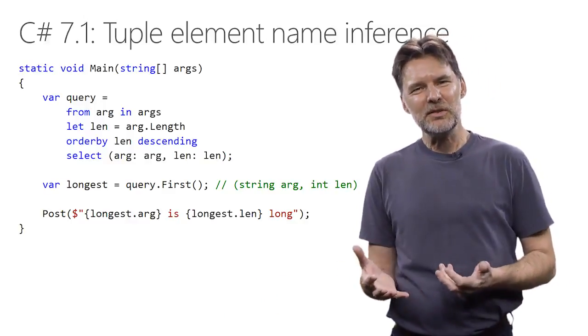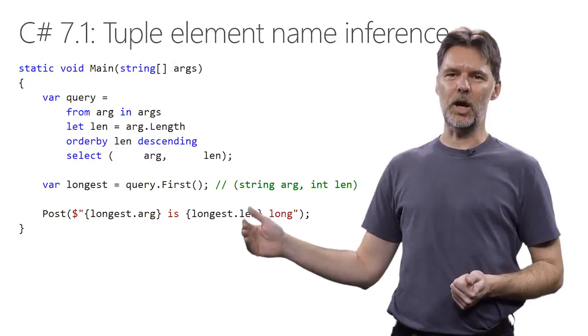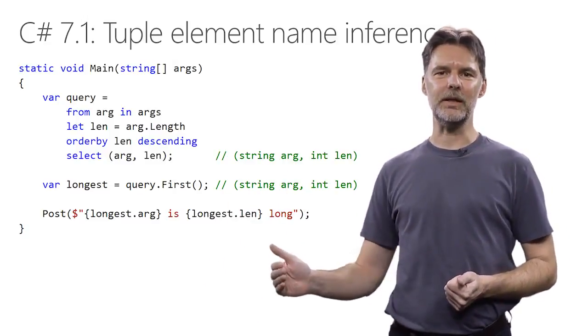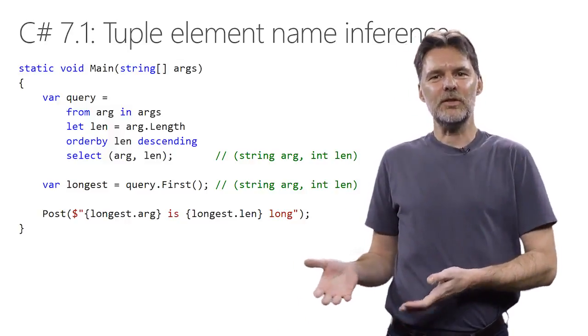However, the select clause seems redundant. In C# 7.1, we let you omit names when they're obvious and simply infer them from the expressions provided. So even though we didn't say that the tuples have element names, it's inferred for us.